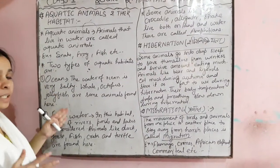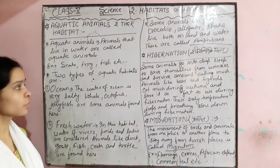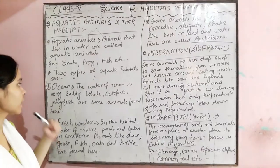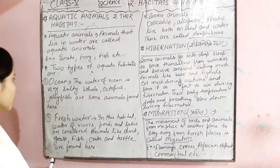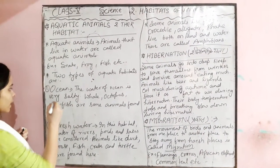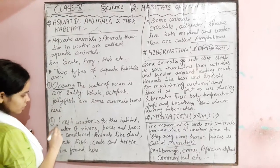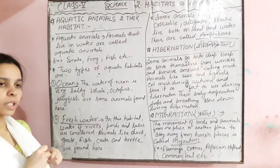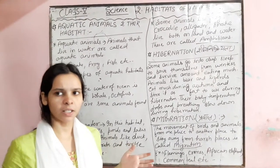There are two types of aquatic habitats. These are ocean and fresh water. The ocean is salty water.